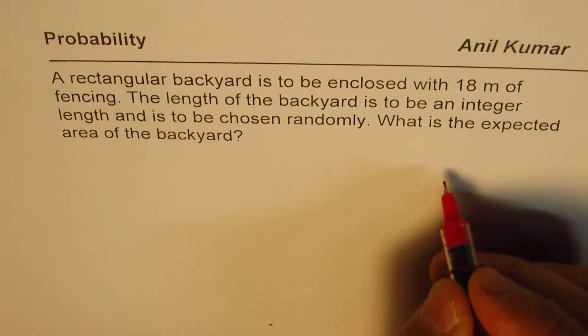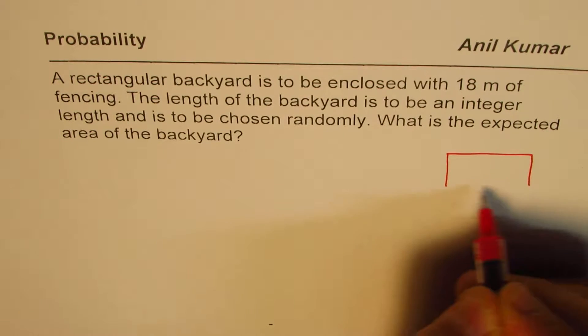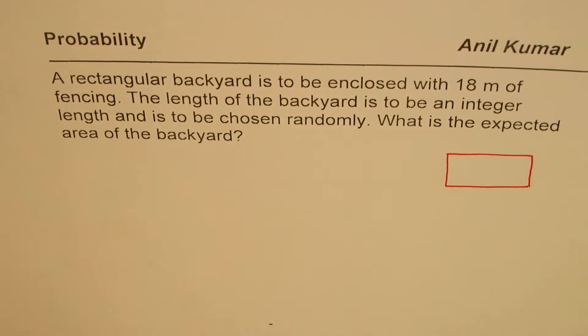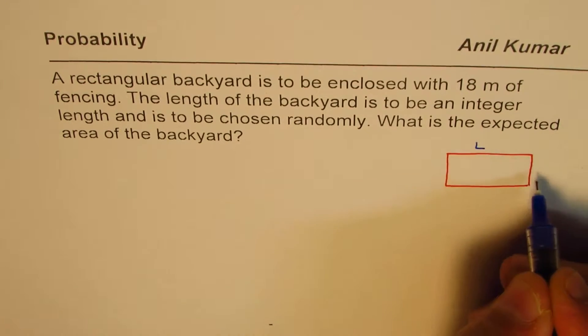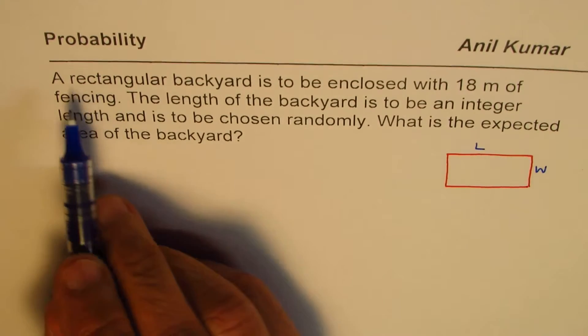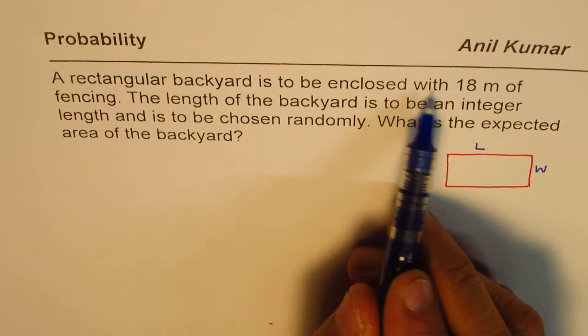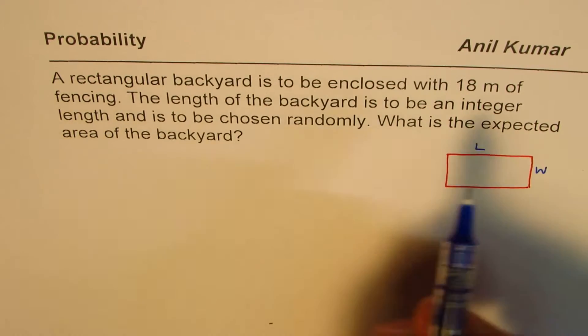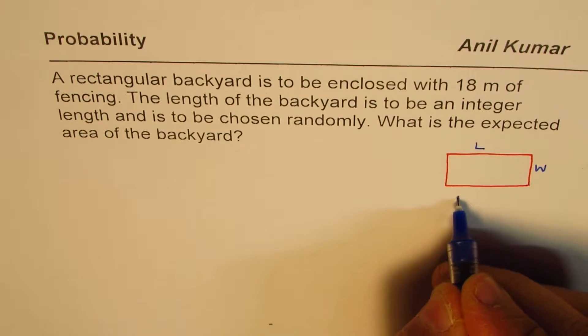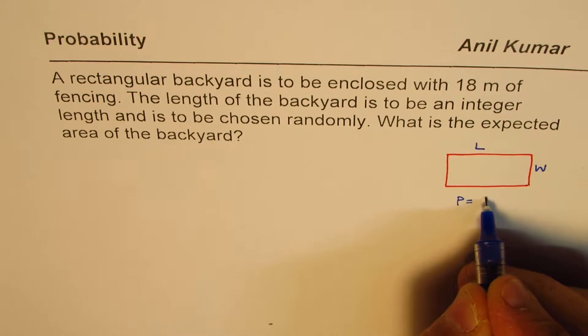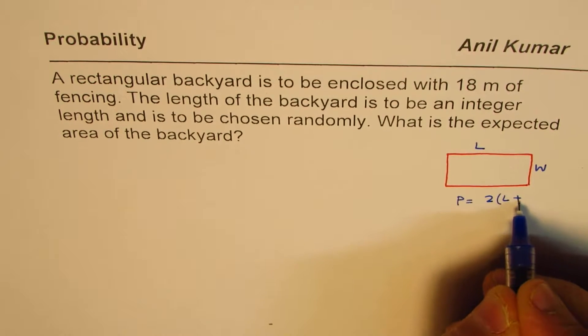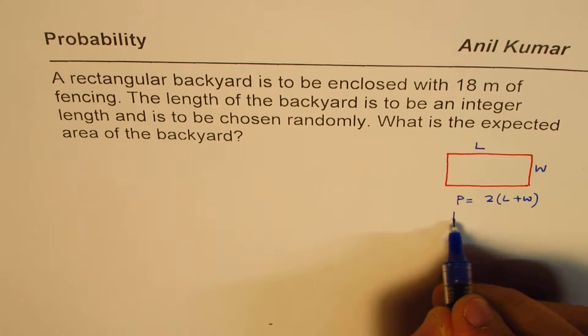So let's begin by making a simple sketch here. We are saying that length is L and W is the width for us. It is to be enclosed with 18 meters of fencing. That means perimeter equals twice length plus width, which is 18.